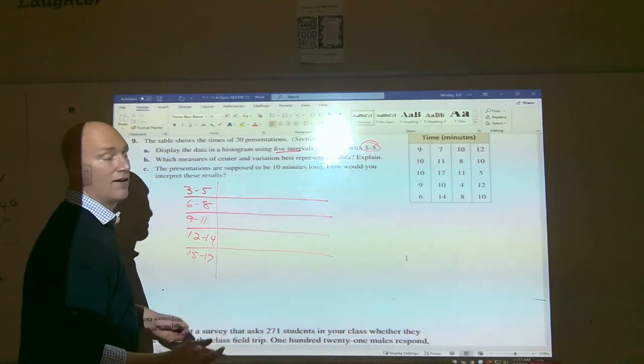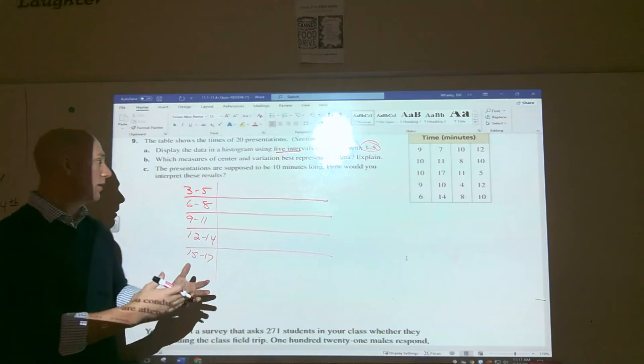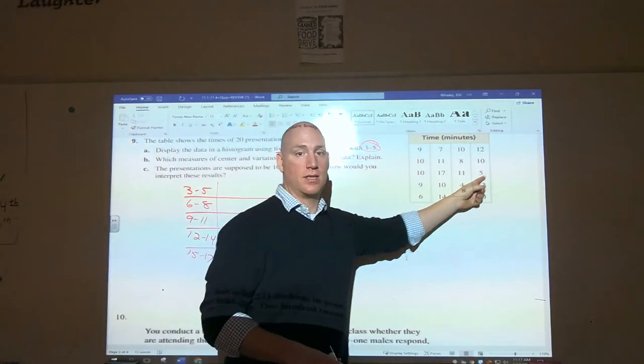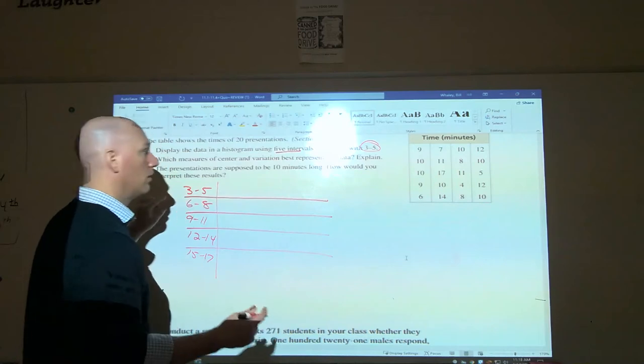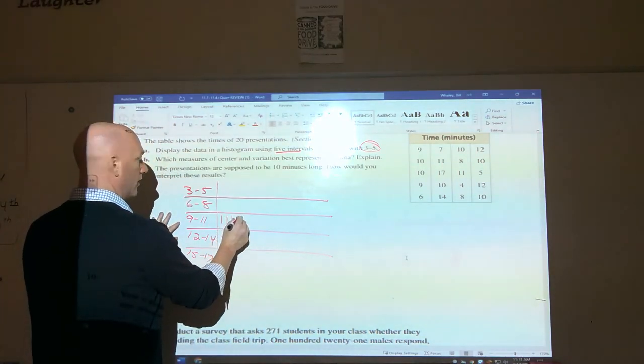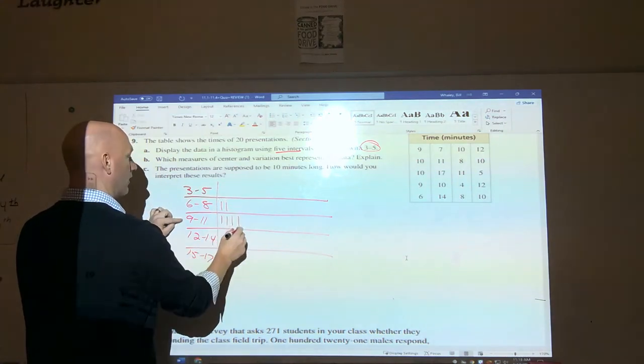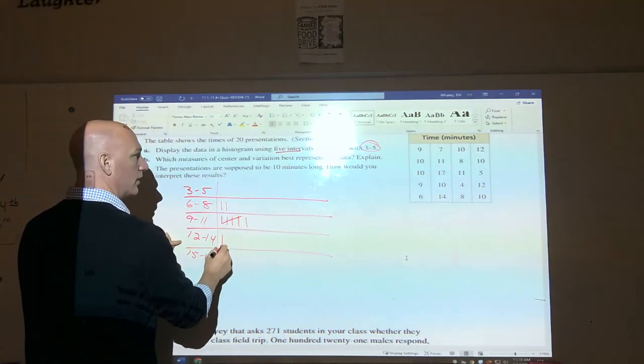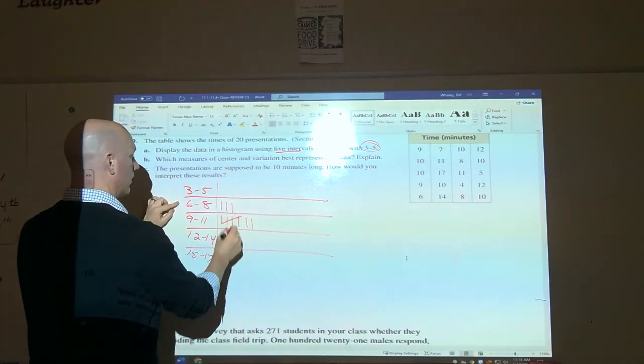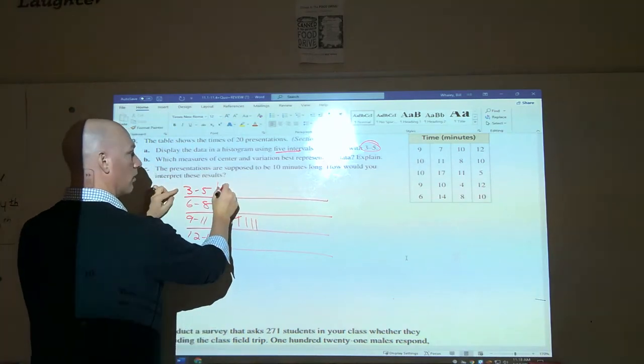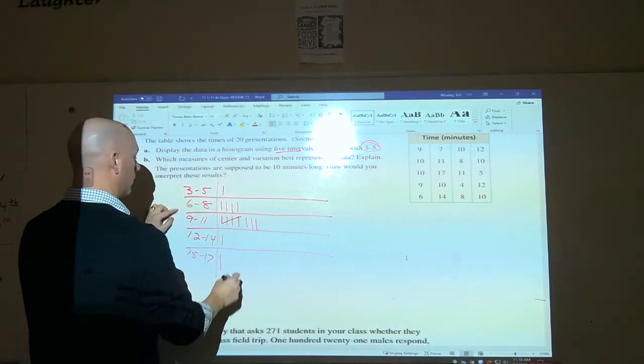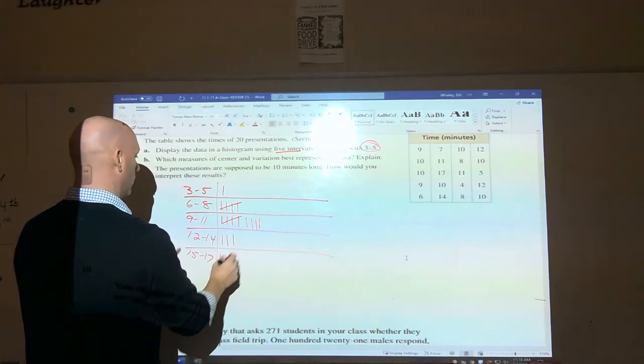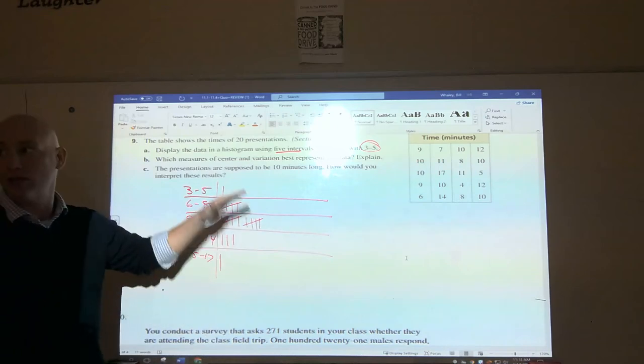Now we have to make a frequency chart before we can make our histogram or our frequency graph. We have to have a frequency chart. All you have to do is go in and count these and see each time they come. So we're going to use a simple tally sheet. We go 9, 10, 10, 9, 6, 7, 11, 17, 10, 14, 10, 8, 11, 11, 4, 8, 12, 10, 5, 12, 10. Just went through all the numbers, now I have my tally sheet.